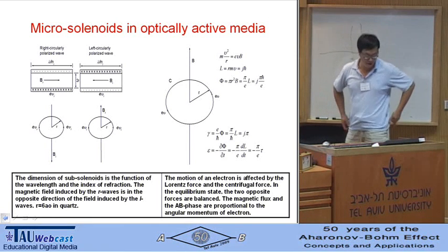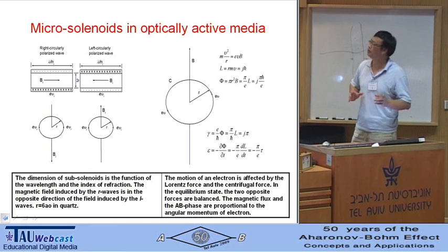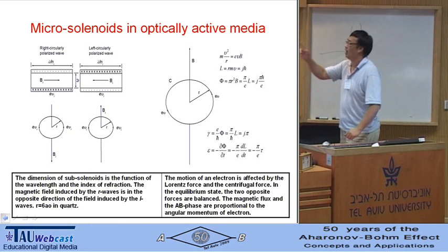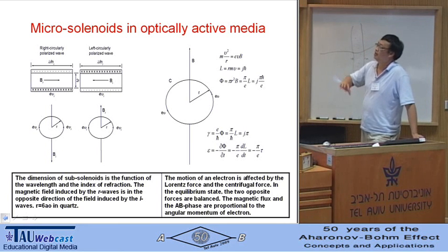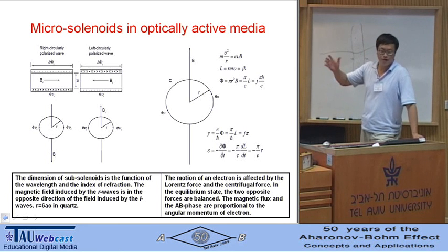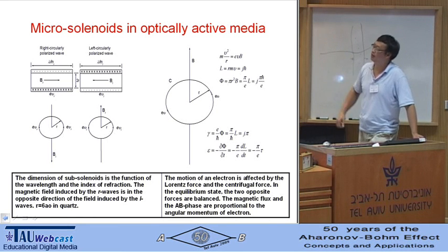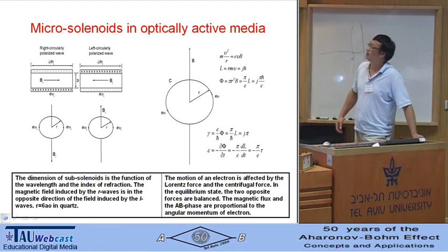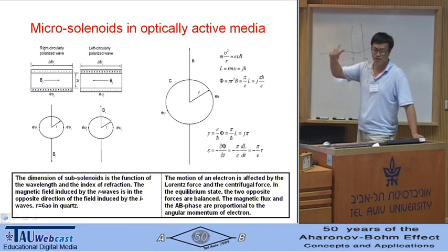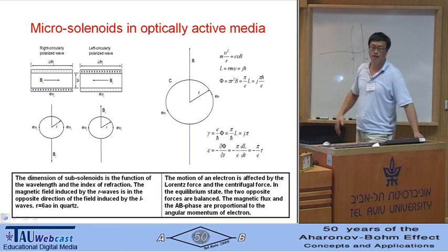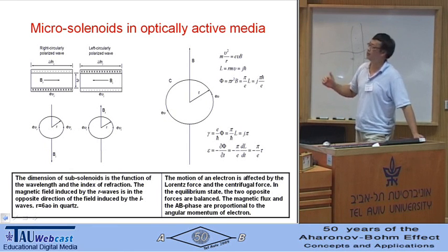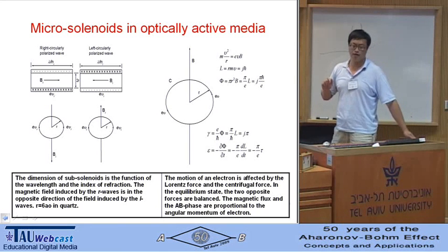The optical activity medium has a dissymmetric structure under the influence of the instantaneous electric field. The instantaneous field constrains the motion of the electron along the micro-helical structure in the light wave, so that it will induce a longitudinal magnetic field along the direction of propagation.